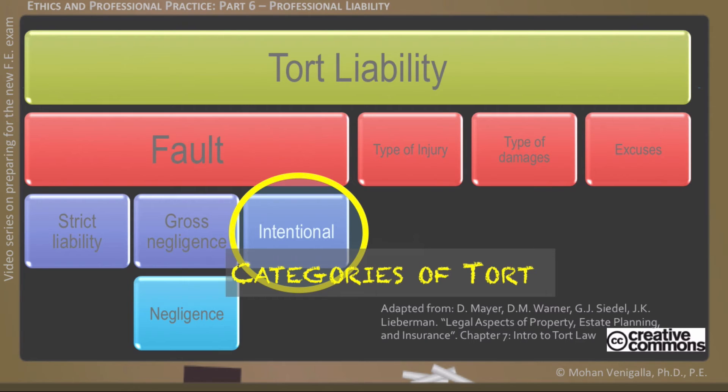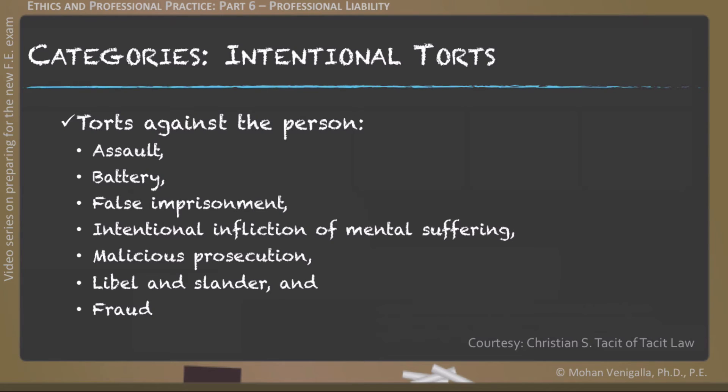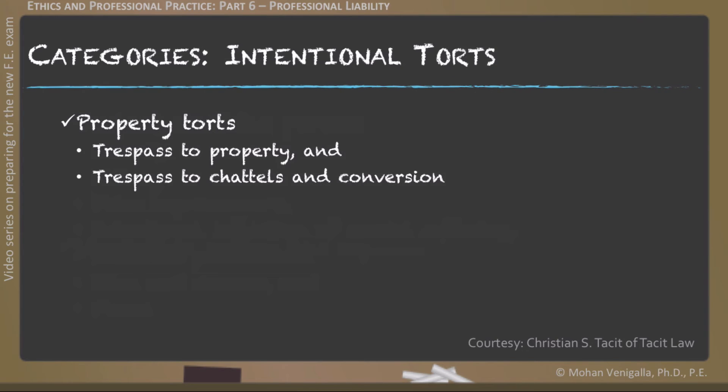Intentional torts against a person include assault, battery, false imprisonment, intentional infliction of mental suffering, malicious prosecution, libel and slander, and fraud. Intentional torts to property include trespass to property, trespass to chattel, and conversion.